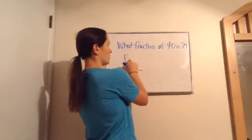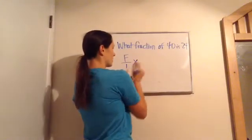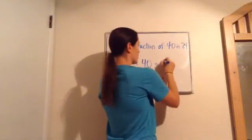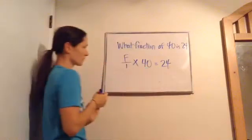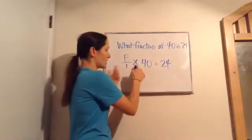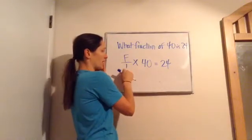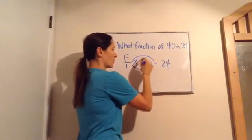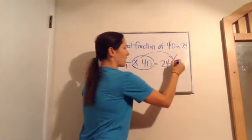Now it says what fraction of means times, 40 is 24. Since this times, we're trying to get the F by itself. So since this is times 40, I'm going to divide it by 40.